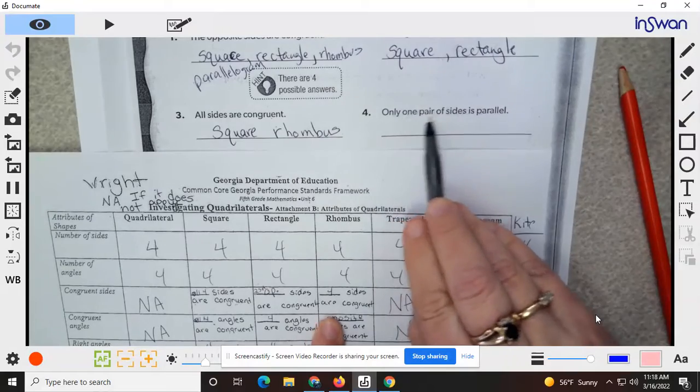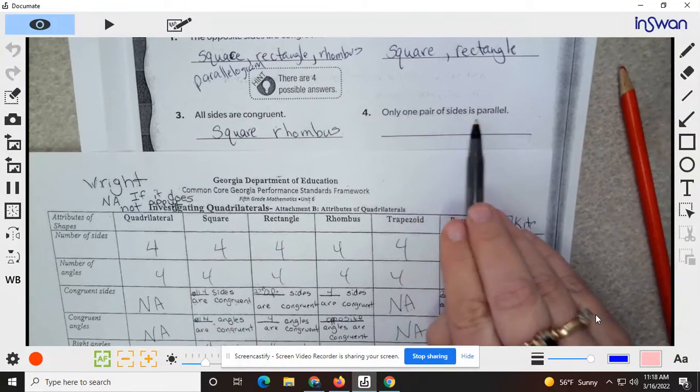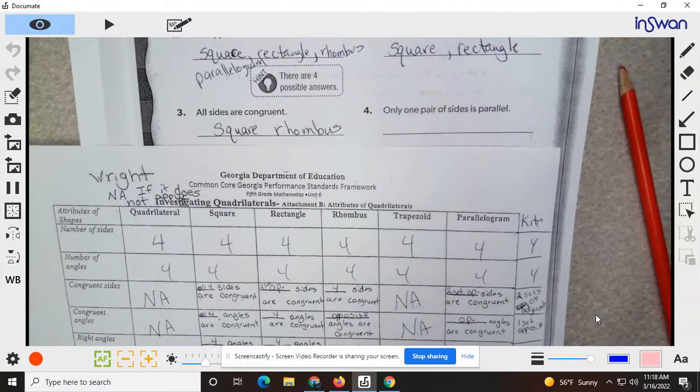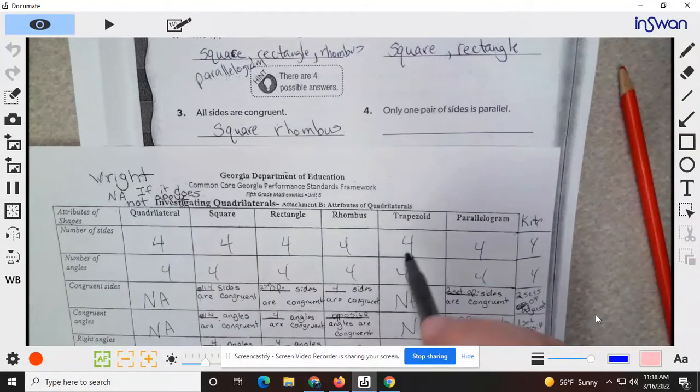Only one pair of sides, only one pair of sides parallel. Go to parallel sides. Two, two, two. One set, trapezoid.